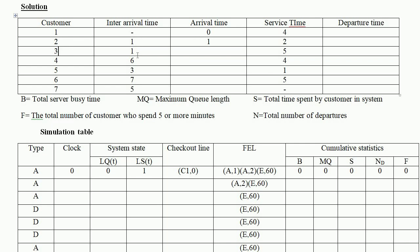Customer 3 has inter-arrival time 1, so arrival time is 1 plus 1 equals 2. Customer 4's arrival time is 2 plus 6 equals 8. Customer 5: 8 plus 3 equals 11. Customer 6: 11 plus 7 equals 18. Customer 7: 18 plus 5 equals 23. So the arrival times are 0, 1, 2, 8, 11, 18, and 23.